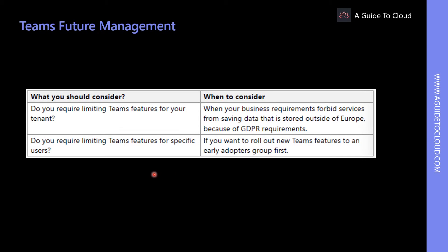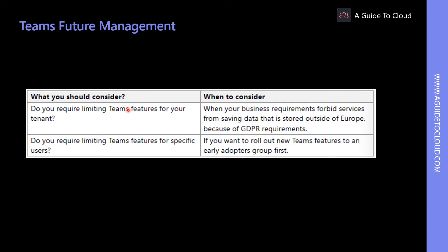Another important aspect of governing and lifecycle management for Teams is the ability to control what features users will have access to. Messaging, meeting, and calling features can be managed either at the Office 365 tenant level or per user level as well. Some of the things you need to consider are: do you require limiting Teams features to your users at the tenant level, or do you require limiting Teams features for a specific user as well?